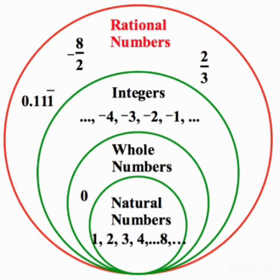Next, about the commutative property. In Rational Numbers, what properties does it satisfy? Rational Numbers are commutative under addition. Rational Numbers are not commutative under subtraction. Rational Numbers are commutative under multiplication. Rational Numbers are not commutative under division. This is the basic property.